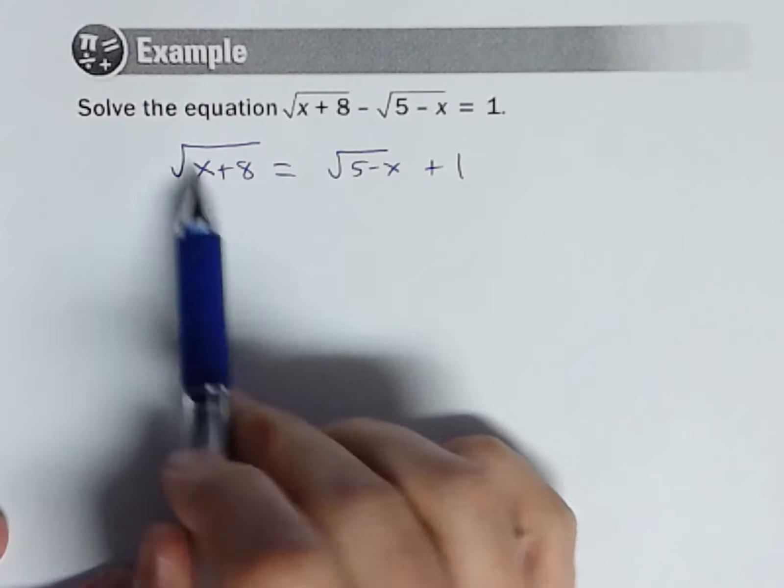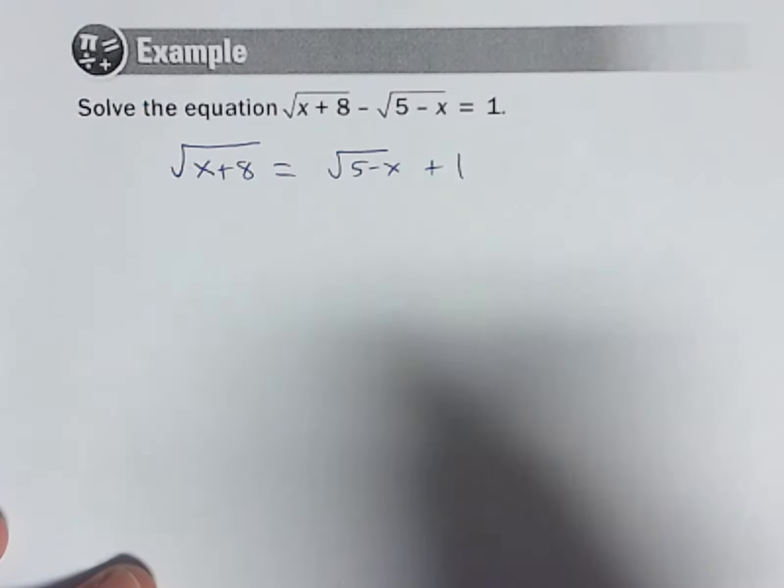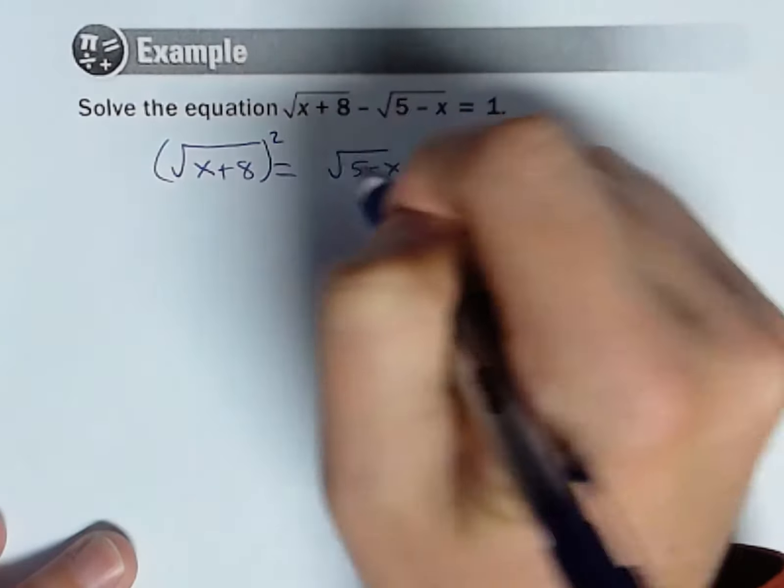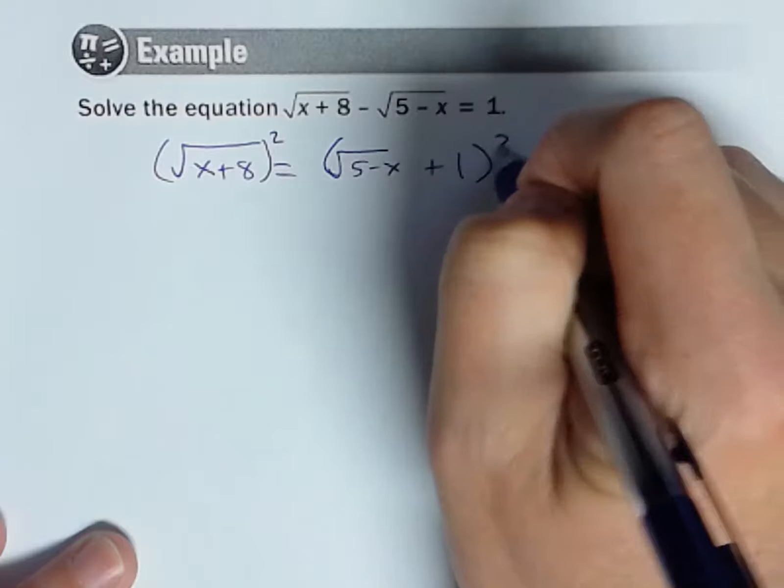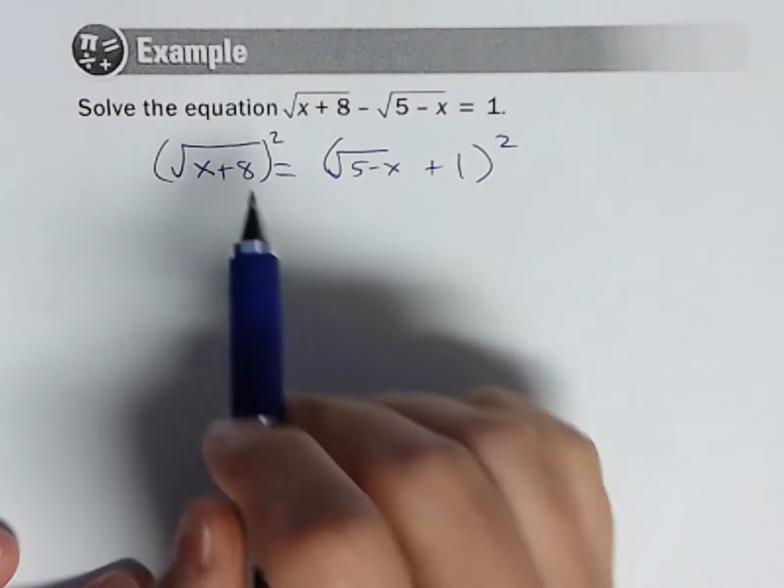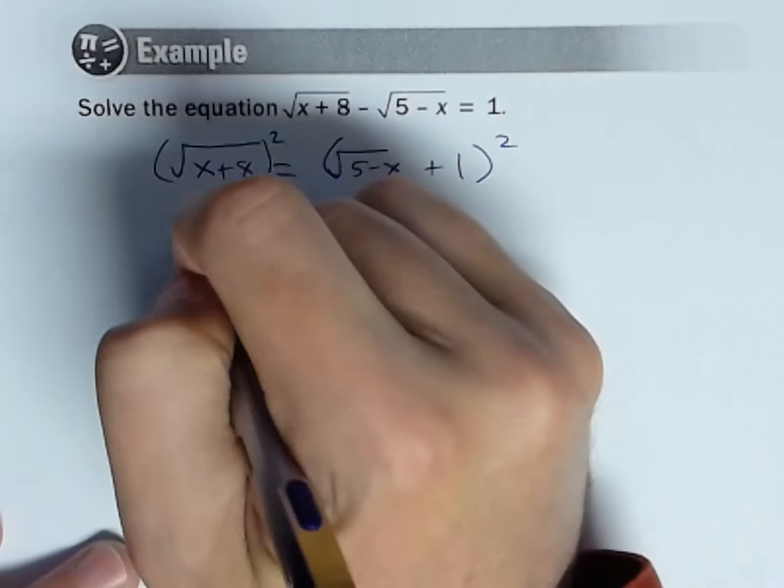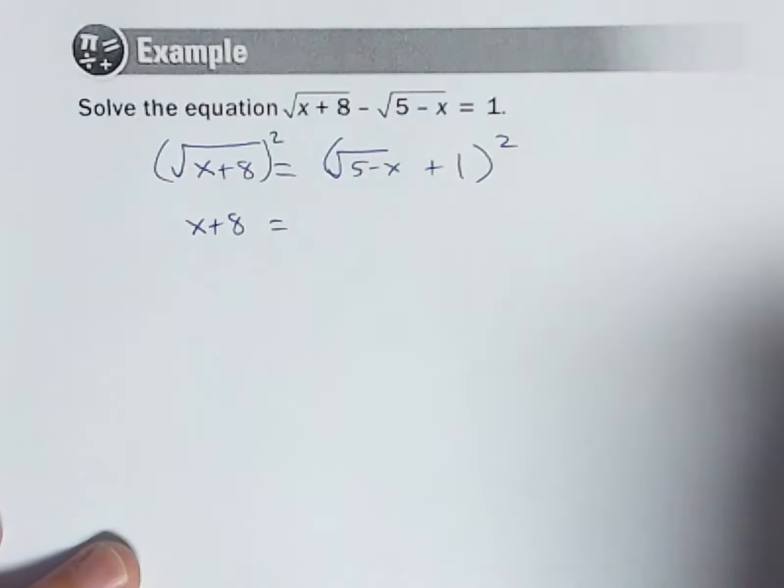Well, isolate a radical. We can't do anything else over here, so we're going to square both sides. Now here's the step where I see a lot of mistakes, so be careful. Watch how I do this. Square this side, no problem, just x plus 8.